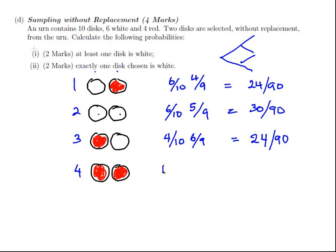2 reds. Well, in the first instance you have 4 out of 10. Take one out, what's the probability of selecting another one? 3 out of 9. And that is 12 out of 90. Those are the 4 possible outcomes.